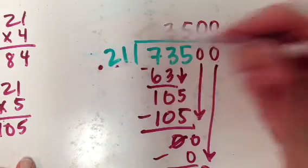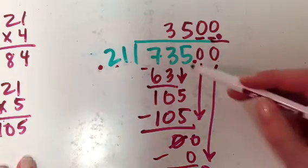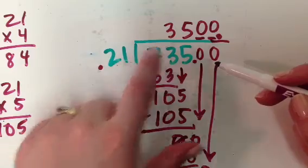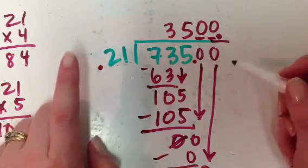And remember, it was actually this, right? And it was actually this. That's what I started with. Those are the original places of my decimal point. 0.21 divided into 735, and then I had to move everything, right?